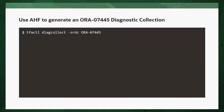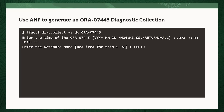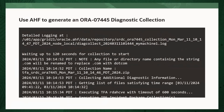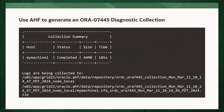Simply log into the machine where the ORA-7445 error occurred, and as the Oracle user run the command: tfactl diag collect srdc ora7445. You'll be prompted to enter the date and time of the ORA-7445 you're interested in, and then the database name. If you're not sure, just press Return. AHF will then identify the logs it needs to collect, trim those to only gather the relevant data, and when finished, package everything into a zip file.